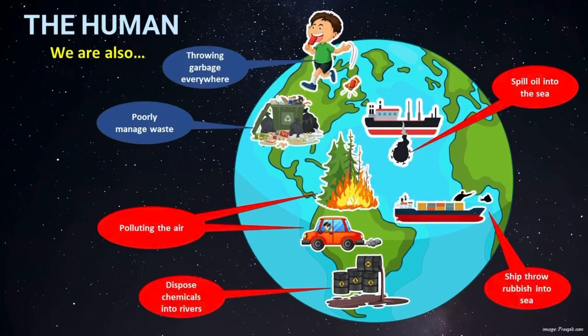Other than that, humans also cause many other destructions on this Earth, like throwing rubbish everywhere and not managing our waste properly. We pollute the air through industrialization and illegal burning of forests. We dispose chemicals into rivers. Ships spill oil into the ocean and also dispose waste into the ocean to save operating costs.